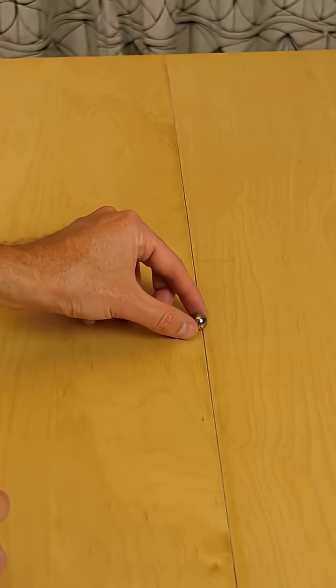So what would it look like if a fourth-dimensional being moved a four-dimensional ball through our 3D space? To us it will look like a sphere that's growing in size.